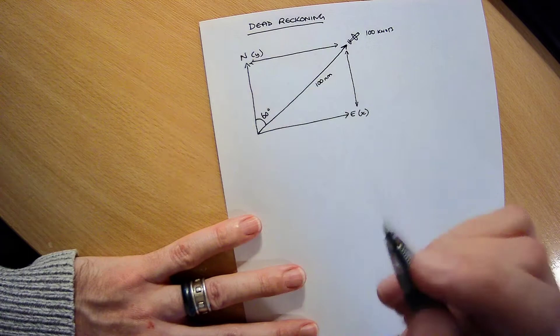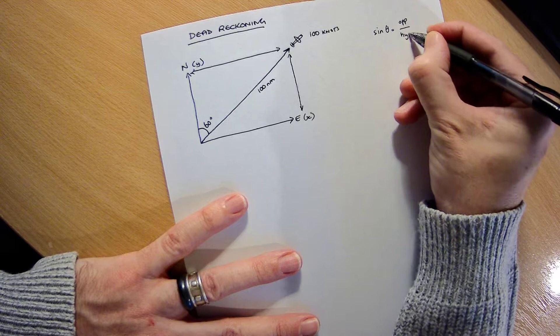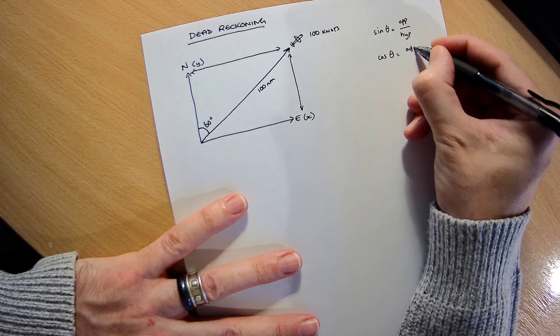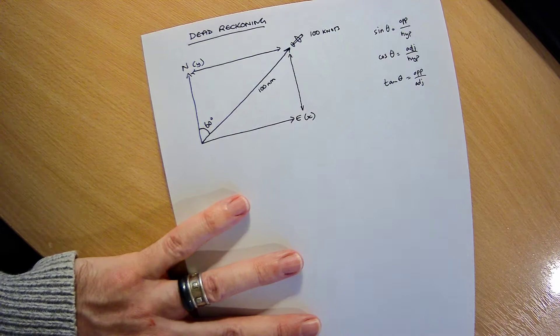So to do this, we need some basic school maths. So if you remember, we have sine theta equals opposite over hypotenuse. Cosine theta equals adjacent over hypotenuse. And tan theta equals opposite over adjacent. I don't think we'll need tan, but we'll get there.